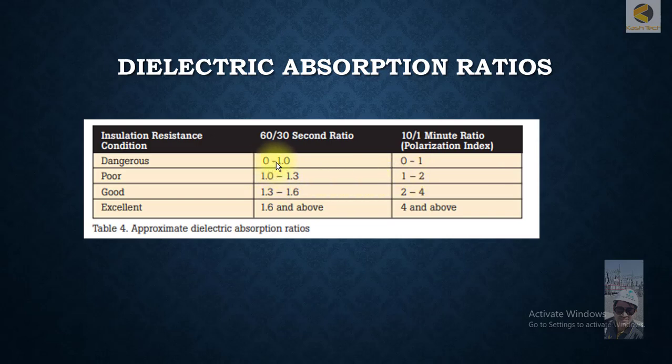If either ratio is between 0 and 1, whether for the second ratio or the polarization index, then the insulation condition is dangerous.